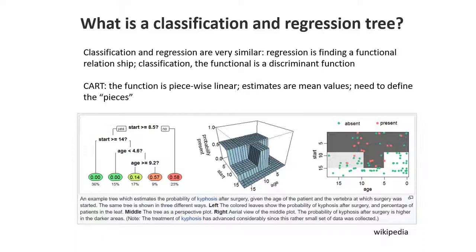Therefore, we need nonlinear methods or methods very different from linear regression. Classification and regression trees — CART — are very popular and offer a way forward in terms of building nonlinear relationships. A regression tree or classification tree attempts to do regression. Instead of coming up with a complicated nonlinear model between Y and the various X's, the CART model does it very differently.